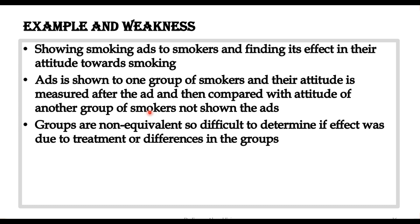Because the groups are not equivalent, we made no effort to make the two groups equal. For example, we don't know the smoking frequency of participants, so one group may have people with higher frequency of smoking while the second group may have lower frequency. Our results will therefore not be comparable — we cannot determine whether the effect was due to the ads or due to the difference between the two groups. This is a serious weakness of this design: it's difficult to determine if the effect was due to the treatment or due to pre-existing differences between the groups.